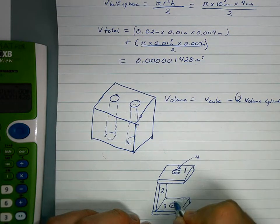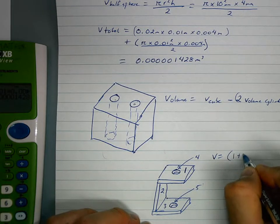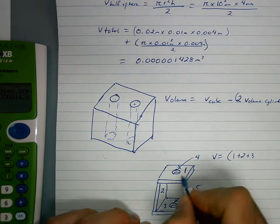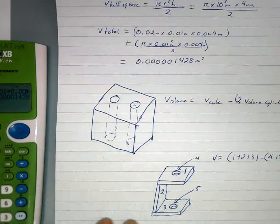We'll call that number four and number five. So our volume is equal to one plus two plus three. So you have to work out each one, and then you have to subtract four and five.